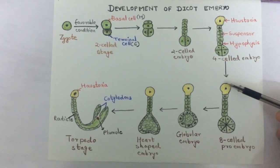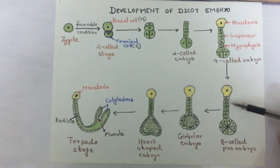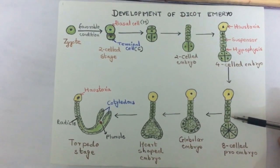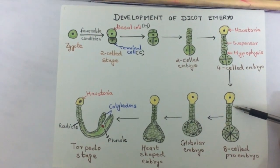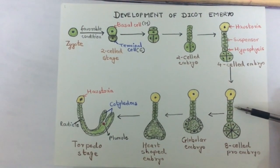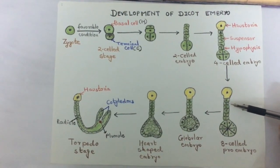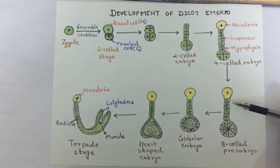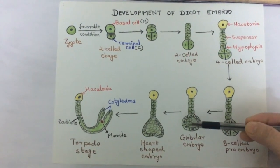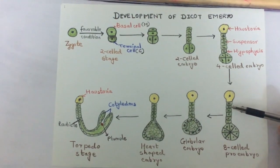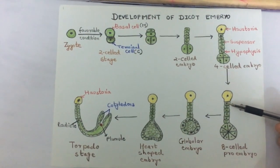At the octant stage of the embryo, the two basal cells divide transversely. The suspensor is formed here with seven to ten cells, and the suspensor attains its maximum development as the embryo attains a globular shape.